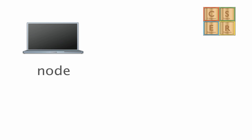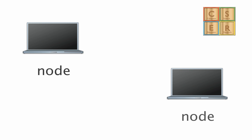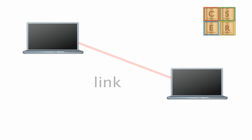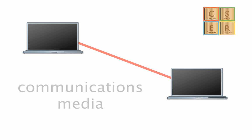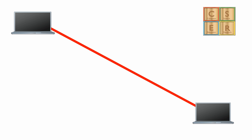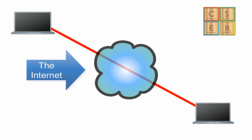We refer to the elements in a computer network as nodes. So every computer you put into the network is a node. Connecting them are links, which we also refer to as communications media. While we might link computers directly together when they're very close to each other, often what we do is connect things across the internet.